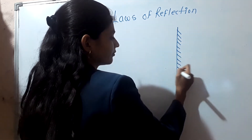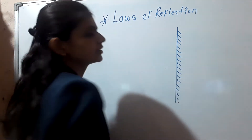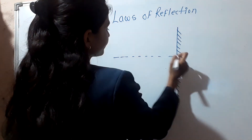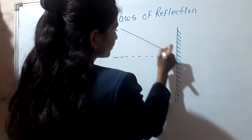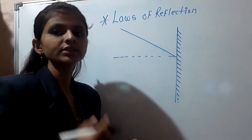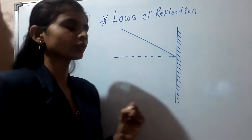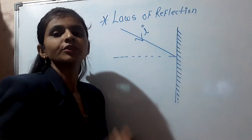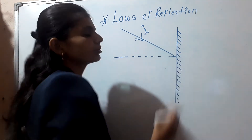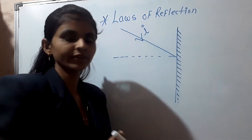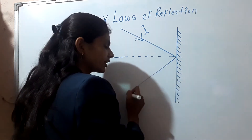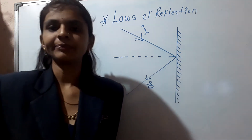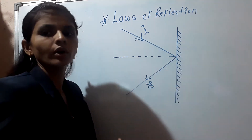Consider this is a surface of a mirror. This one is the normal ray. When the incident ray — the ray which falls on the surface — that ray is known as the incident ray, and it is denoted by using 'i'. When the incident ray falls on the surface of the mirror, it gets reflected, and that reflected ray is known as the reflected ray.